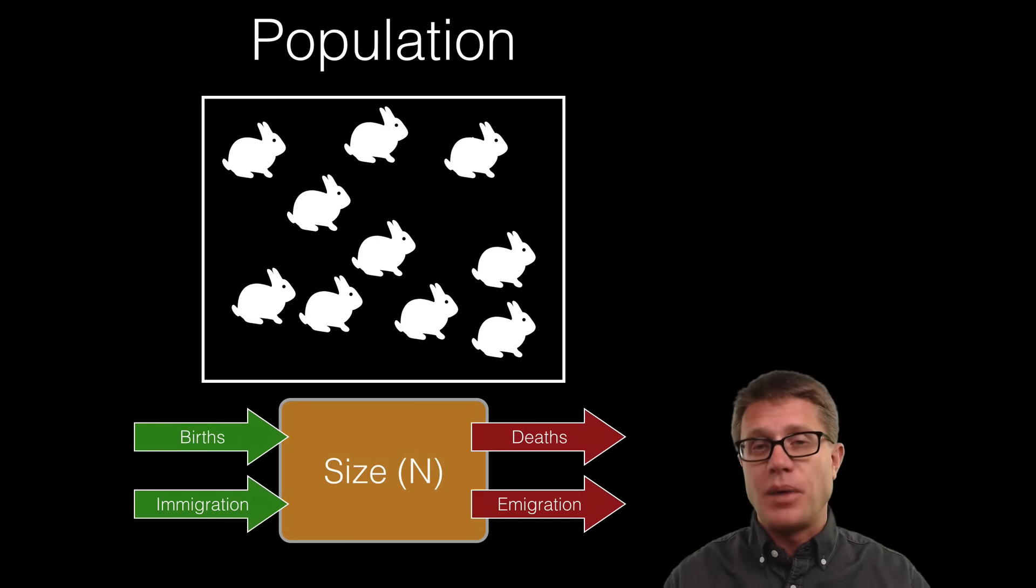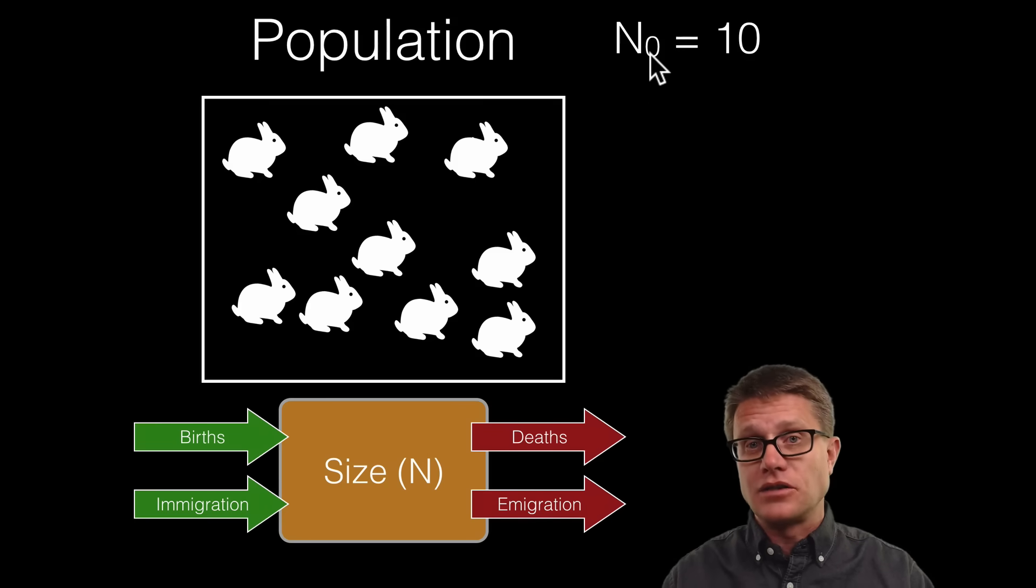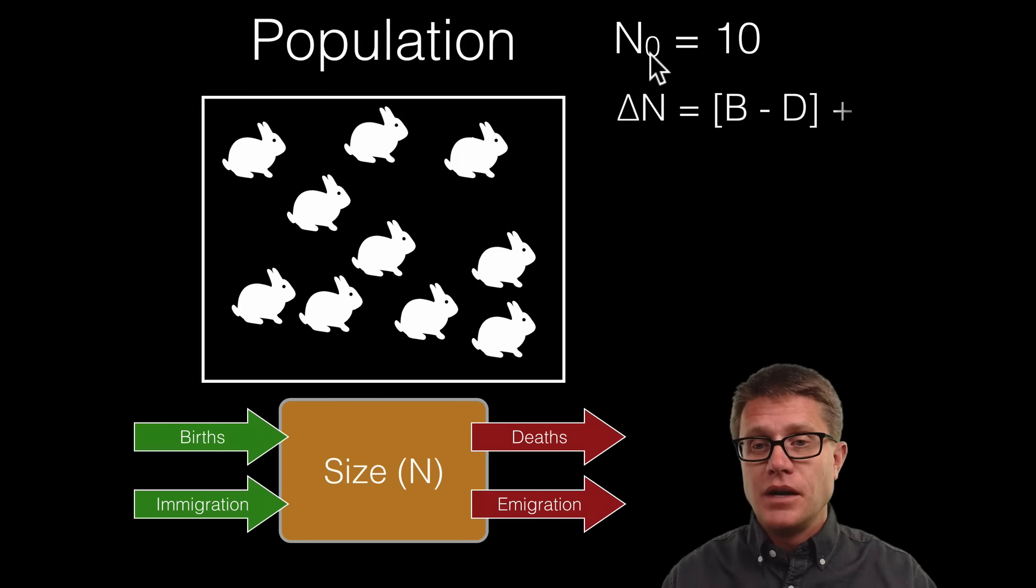But when it comes to health, the population size is incredibly important. It is dictated by births, deaths, immigration, and emigration. And so we have a formula that allows us to look at that. And the calculations are very simple. You can do them just in your head. And so let us say we have a population of 10. So our n naught is going to be 10. That is our initial population. Here is our equation. The change in n is going to be the births minus the deaths plus the immigration minus the emigration.